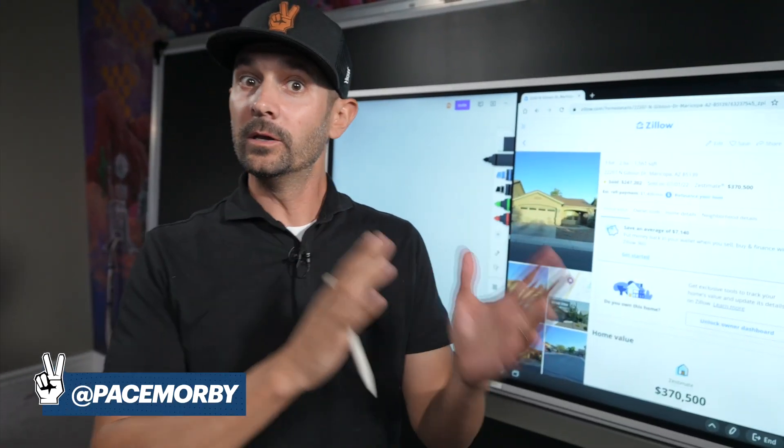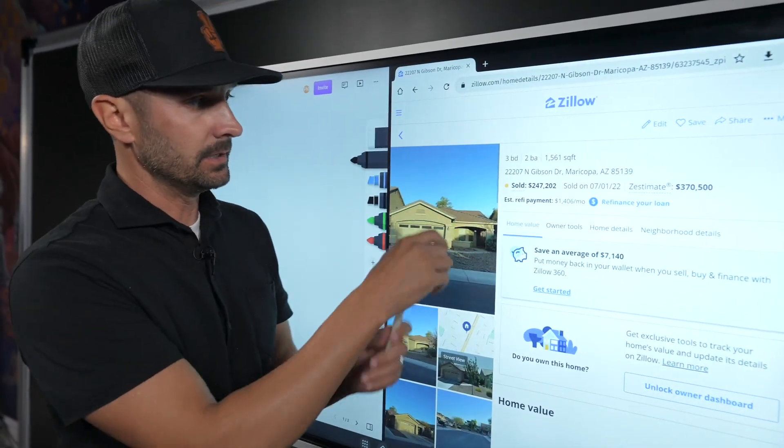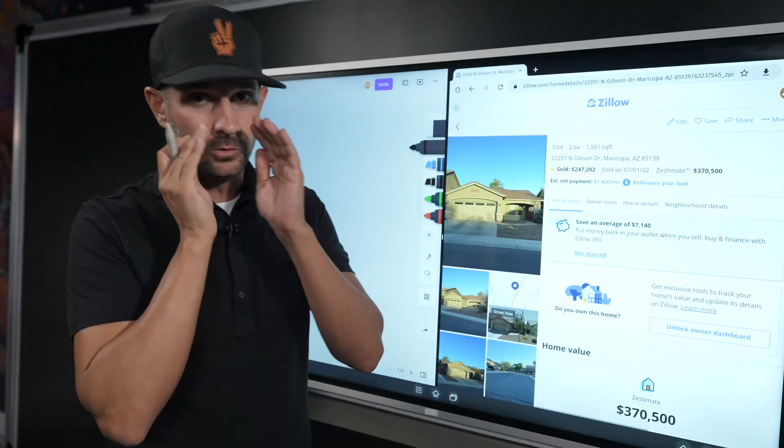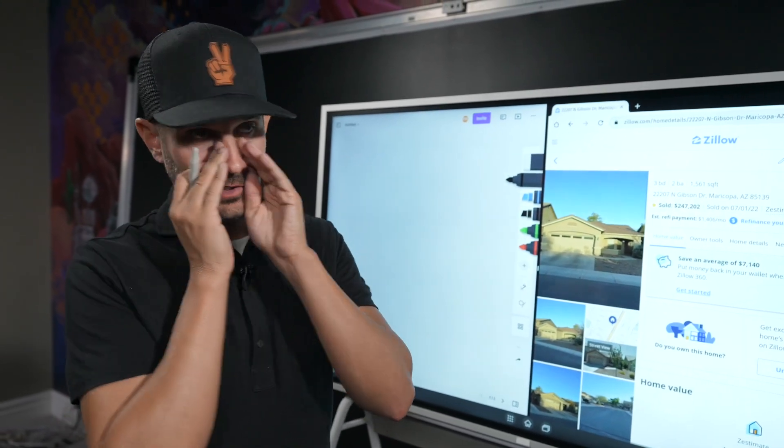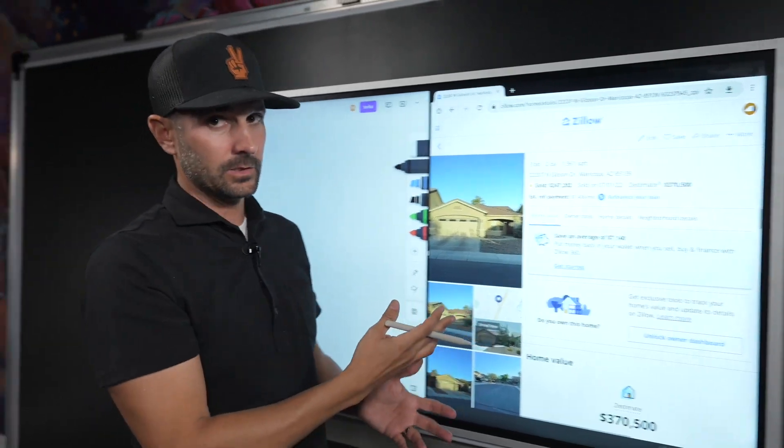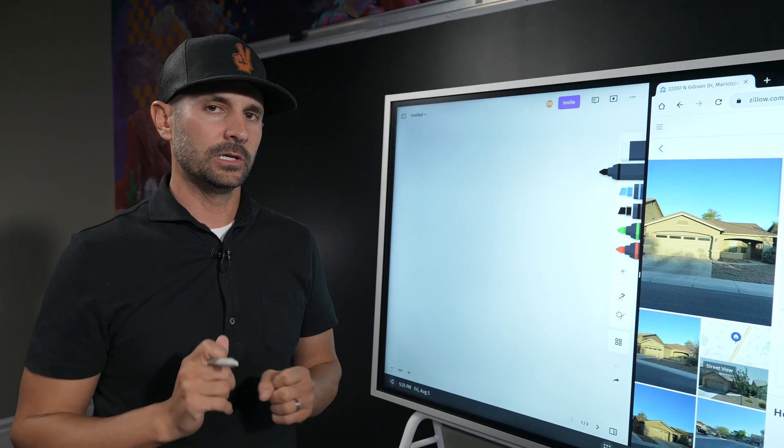This is part two of the real deal where we went out to the property on Gibson. 22207 North Gibson Drive. YouTube doesn't want to see addresses, so hopefully YouTube, please don't kick us off. So this is a house that we own. We just closed escrow on it about four days ago.